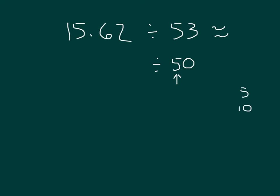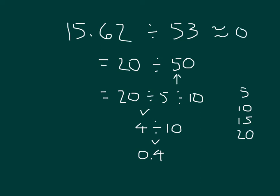We also have 20. But the multiple of 5 that is the closest is 20. So we will go 20 divided by 50. So this can be rewritten as 20 divided by 5 divided by 10. 20 divided by 5 is 4 and then we divide that by 10. And our knowledge of place value tells us that it's 4 tenths. So 15 and 62 hundredths divided by 53 is about 4 tenths.